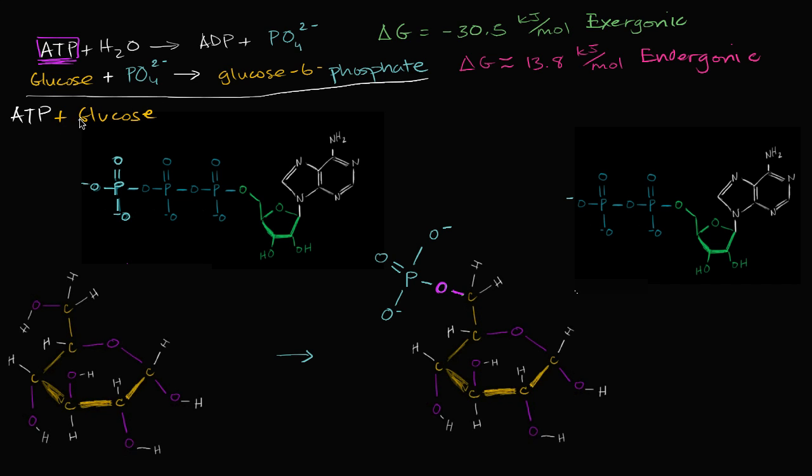And we use an enzyme, the general term for it is hexokinase, to facilitate this reaction, to lower the activation energy. It's going to yield glucose-6-phosphate and ADP.